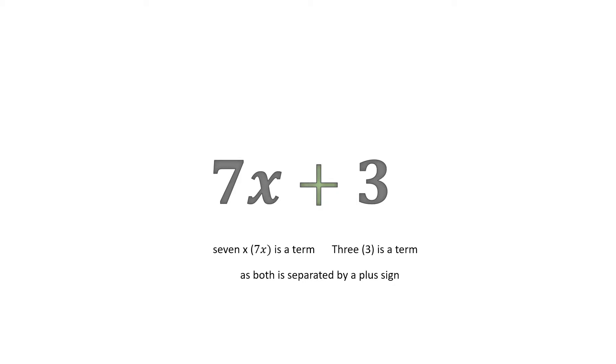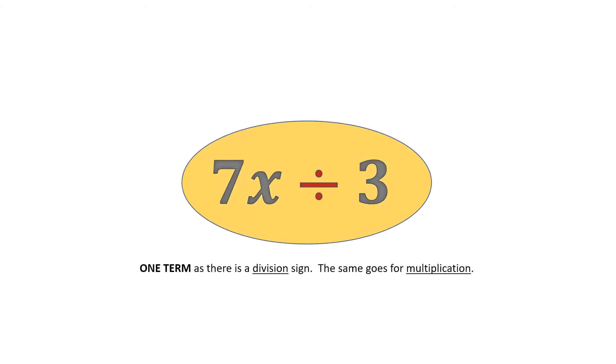However, if we have 7x divided by 3, or even 7x times 3, then it is seen as one term, as it is not separated by a plus or minus sign. That is the golden rule to remember when we look at these expressions.